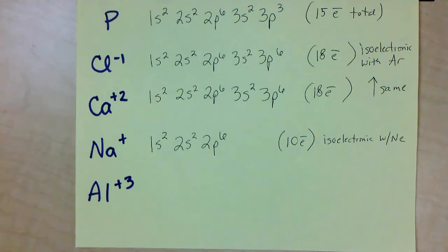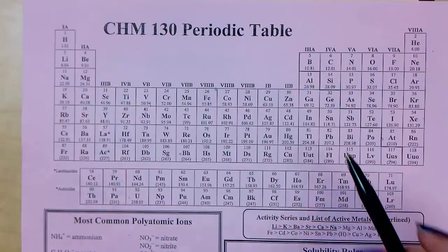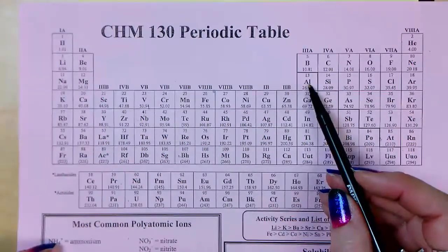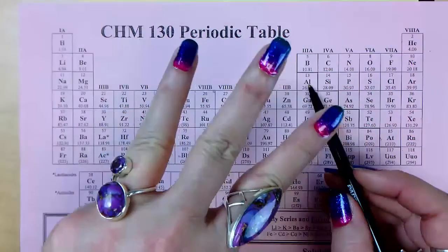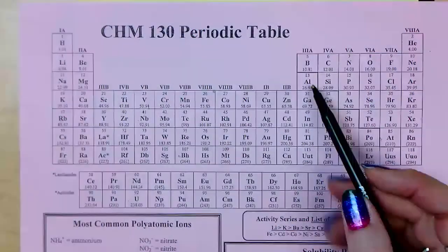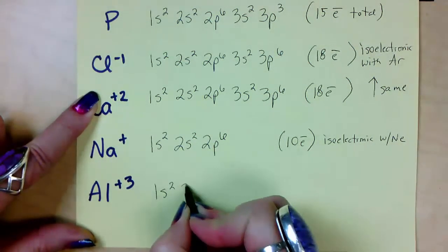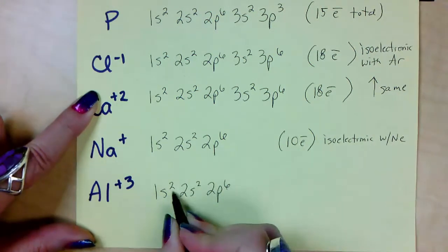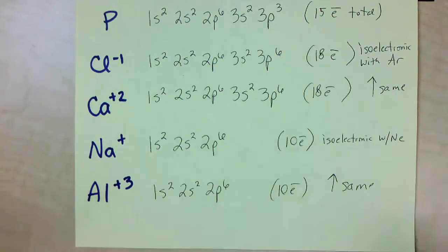The last one: Al³⁺. Aluminum is number 13. A 3+ charge means 3 more protons than electrons, so 3 electrons went away. Instead of 13 electrons, it only has 10. Filling up to 10: 1s2, 2s2, 2p6 — 2+2+6=10 electrons. It's isoelectronic with neon, which is isoelectronic with Na⁺. That's how we do electron configurations for ions.